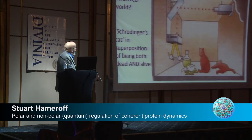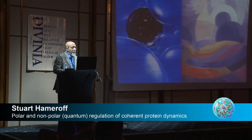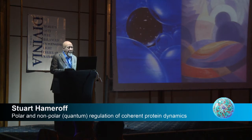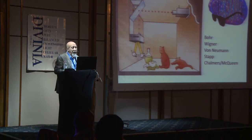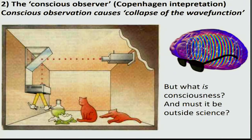If we apply this to the measurement problem of Schrödinger's cat, there are several possible explanations for why we don't see superpositions in our classical world. One is the multiple worlds hypothesis, where superpositions are separations in reality and each possibility branches off to form a new universe — some with a dead cat, some with a live cat. Another possibility is the conscious observer, or Copenhagen interpretation, in which conscious observation causes collapse of the wave function. Niels Bohr, Wigner, von Neumann, Stapp, and recently Chalmers and McQueen suggest that consciousness causes collapse of the wave function.